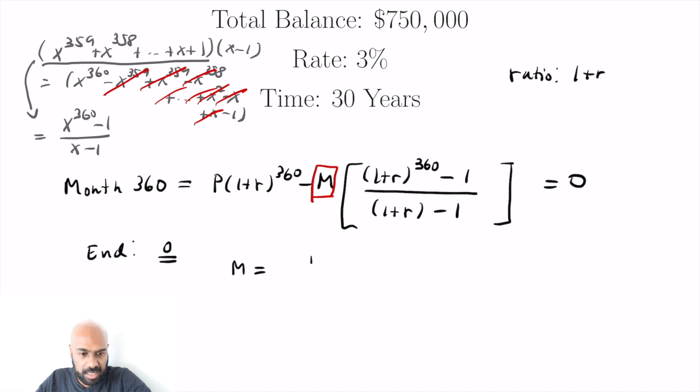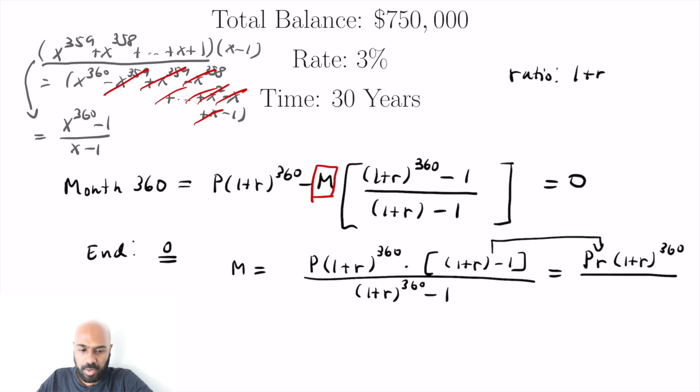So if we rearrange all of this, we'll get M is, let's see, we'll have P times one plus R all raised to the 360 and then divided by this term and then multiply by another term. So we're going to divide by one plus R raised to the 360 minus one and then multiply by the denominator we see attached to the fraction with M in it, which is one plus R minus one. Now one plus R minus one is R, so we end up with P times R times one plus R to the 360 all over one plus R to the 360 minus one.